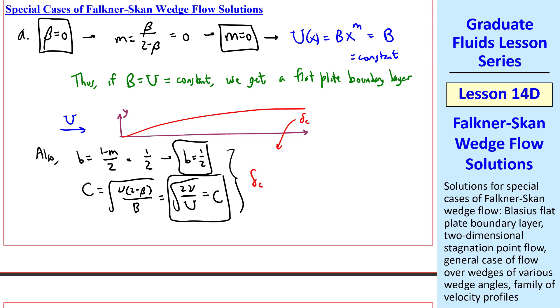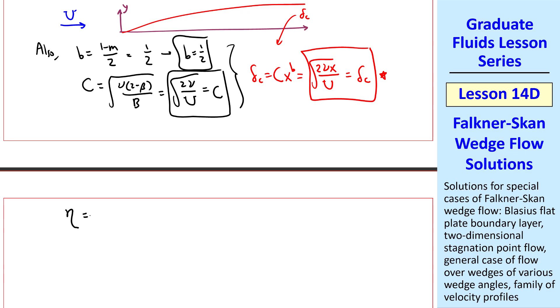Therefore, this delta_c, which is cx to the b, becomes square root of 2 nu x over u. Our similarity variable eta, which is y over delta_c, thus becomes y times square root of u over 2 nu x. And the Falkner-Skan similarity equation, when beta is zero, becomes f triple prime plus f f double prime equals zero.